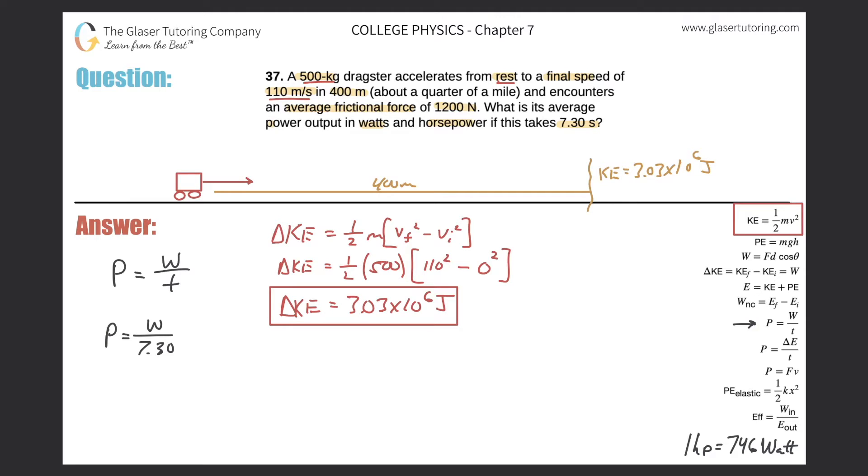Now, is this kinetic energy exactly equal to the amount of work that the dragster produced? Well, not exactly, because it also had to overcome friction. It also had to overcome friction. So not only does it have this energy value at the end, but in order to get to this energy value, it had to overcome frictional forces all along the way here.